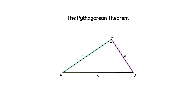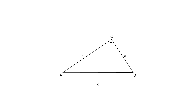The Pythagorean theorem states that given a right triangle, A squared plus B squared equals C squared. We will use similar triangles and the resulting proportional sides to prove the Pythagorean theorem. Let's start with a right triangle and construct an altitude from the vertex of the right angle to form a perpendicular with the hypotenuse.